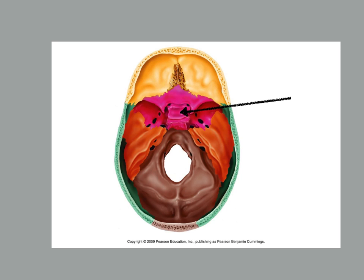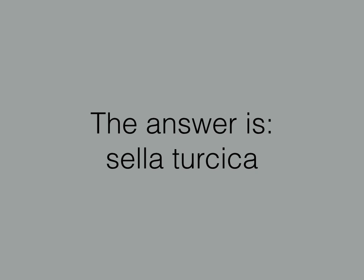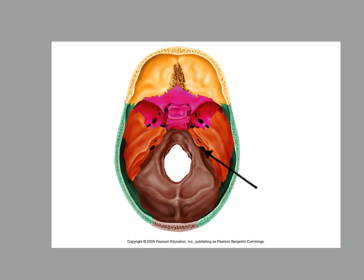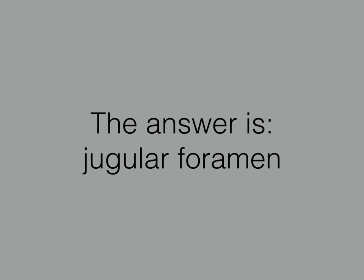There's a little depression right in the middle of the sphenoid bone — what is that called? It's the sella turcica. Here's an opening between the temporal and occipital bone. That is the jugular foramen. That's what your jugular vein passes through.